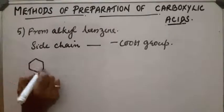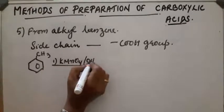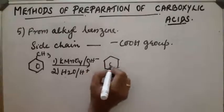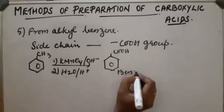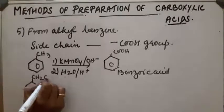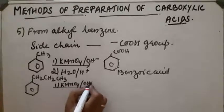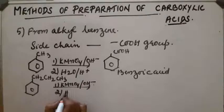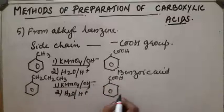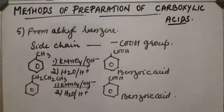For example, toluene on reaction with alkaline KMnO4 followed by acidification gets converted into benzoic acid (COOH). Similarly, a compound with a longer side chain undergoes the same reaction to give benzoic acid. These are the different methods of preparation of carboxylic acids.